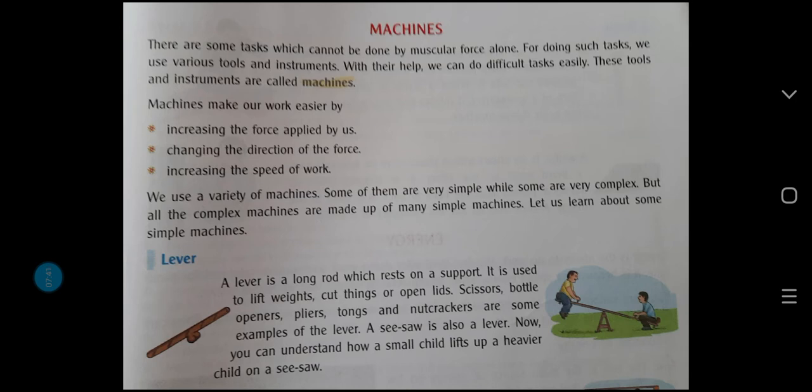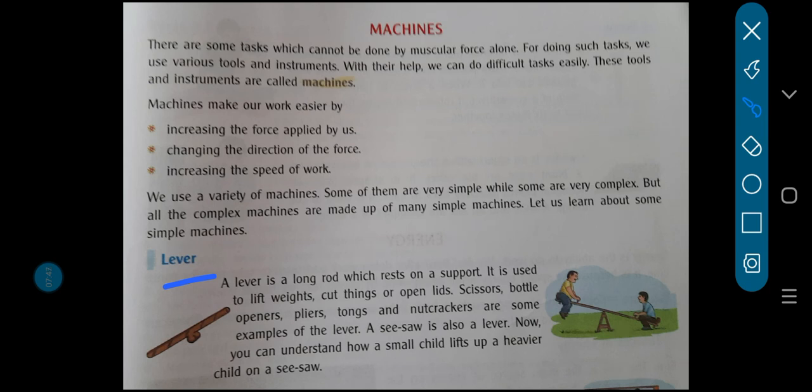The first example of simple machine is lever, children. What do you mean by lever? A lever is a long rod which rests on a support. It's a long rod that rests on a support. See the support given over here. It is used to lift weights, cut things, or open lids.